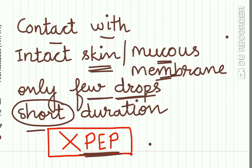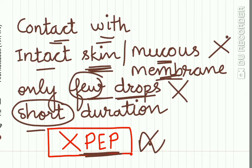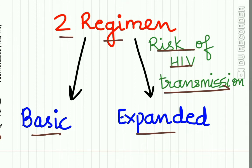PEP is not needed in certain conditions. If HIV-infected blood comes in contact with your intact skin or mucous membrane, PEP is not needed. Secondly, if only a few drops of blood come in contact with intact skin or mucous membrane, PEP is not needed. Also, if the exposure is of very short duration, post-exposure prophylaxis is not needed.